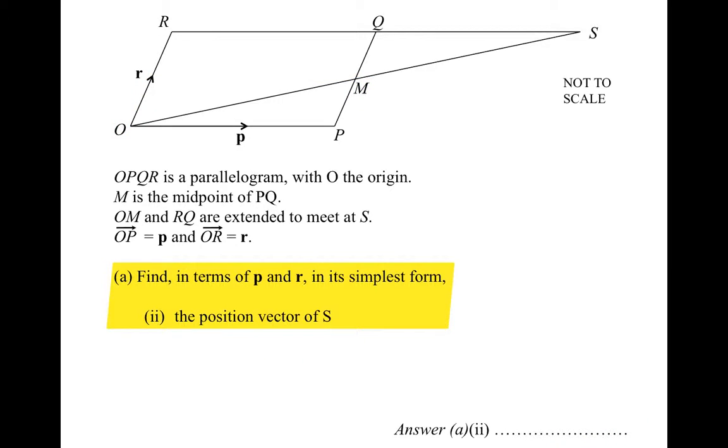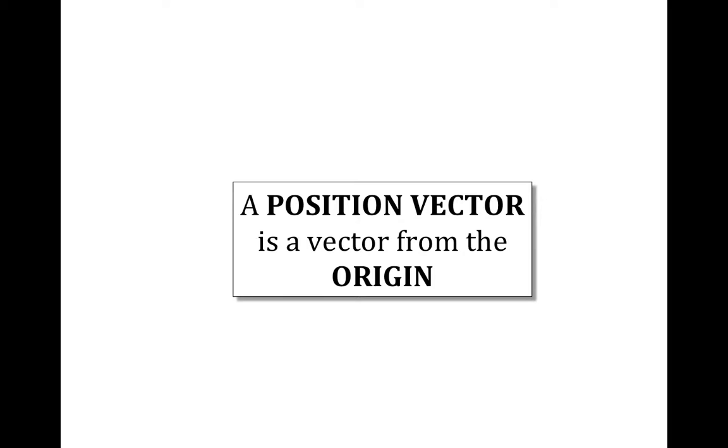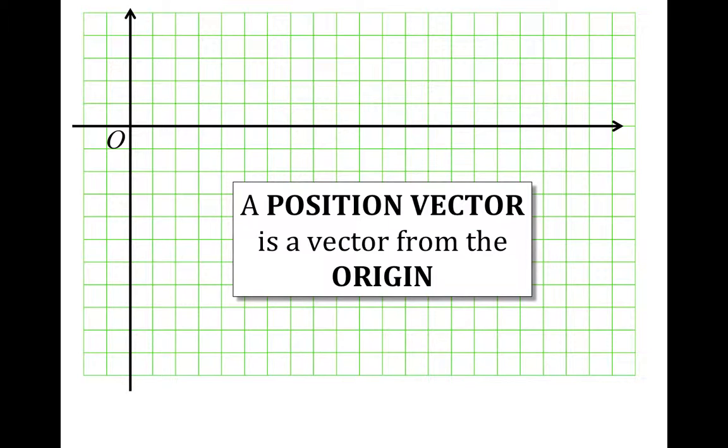The next part asks us to find the position vector of S. First we need to know what a position vector is. A position vector is a vector from the origin. For example, if we consider some graph axes and the point (8,3), the vector from the origin to the point (8,3) would be 8 across and 3 up, so it would be the vector (8,3). A position vector is so called because it gives the position of a point from the origin.